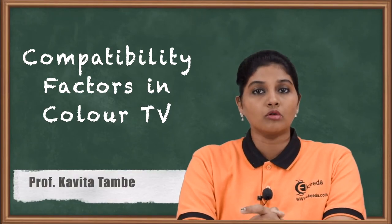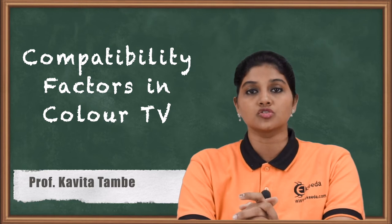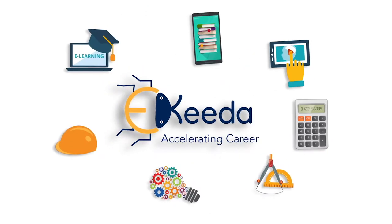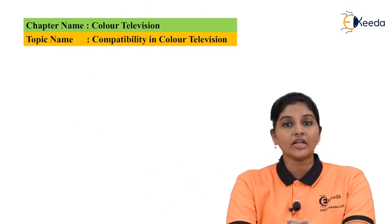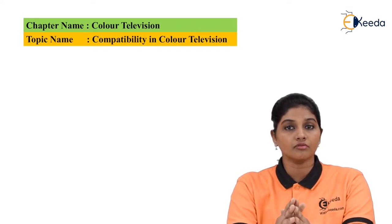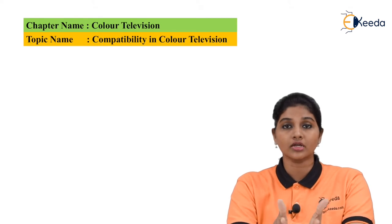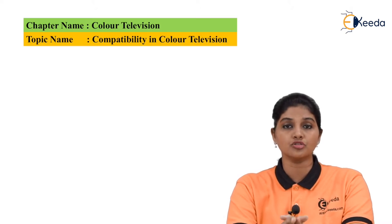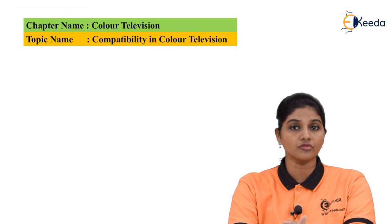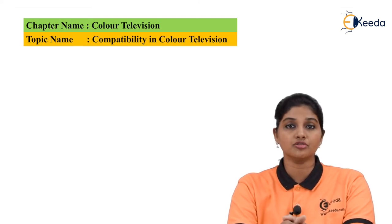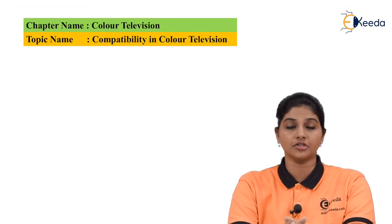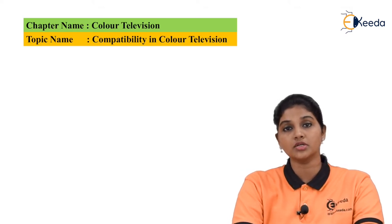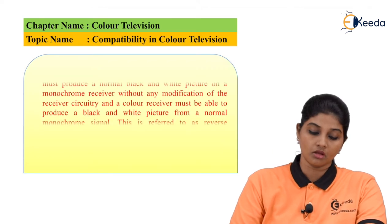In this video we are going to talk about the term compatibility in case of color television. Compatibility is nothing but having the ability to function with other systems. If we consider monochrome TV and color television, the color television must have an ability to produce a black and white picture.